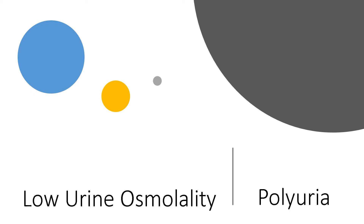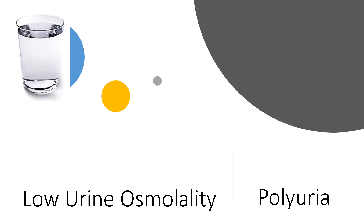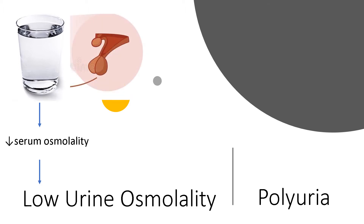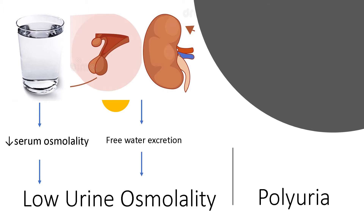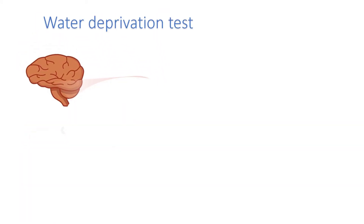All these disorders share two things in common: they all present with polyuria and they all have low urine osmolality, but for different reasons. You might get low urine osmolality because you're drinking a lot of water, as in primary polydipsia, which makes plasma osmolality low and lowers urine osmolality. Or it's because you do not have ADH or your kidney is resistant to ADH, causing free water excretion in the urine.